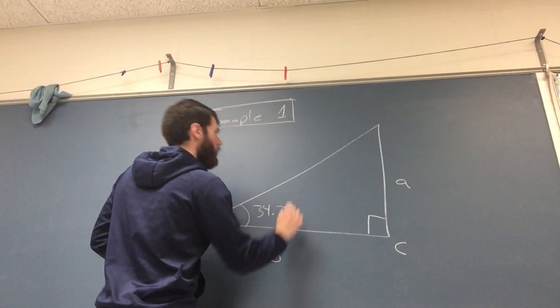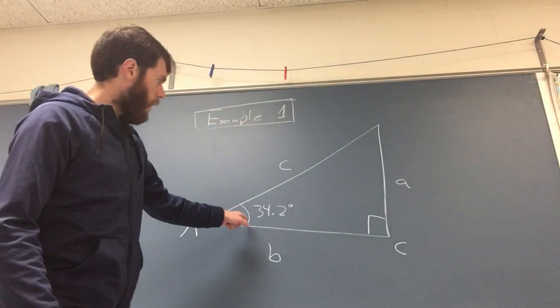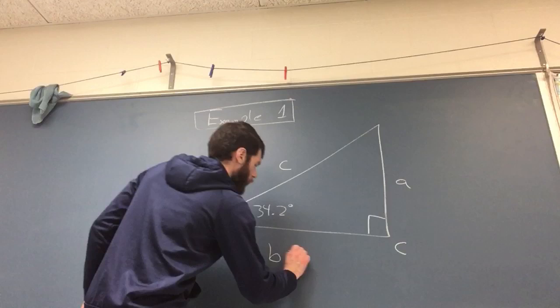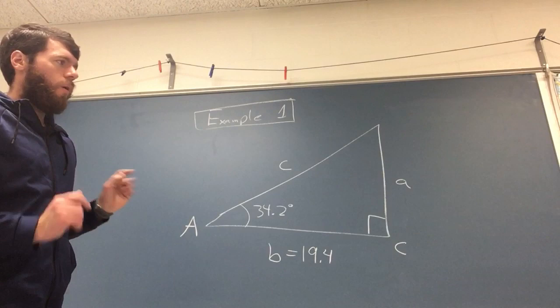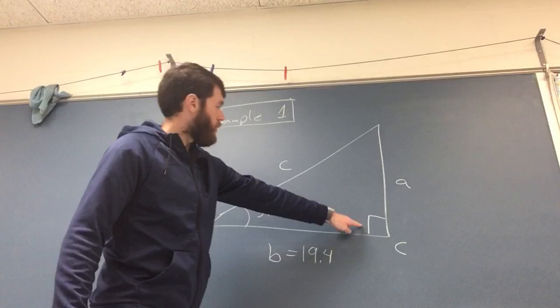There we go. All right, that's all we have: an angle. And oh, we were given a side. We were told that B is 19.4. So we have an angle, we have this side, and we know it's a right triangle. How can we find all the other angles and all the other sides? Very easily to start with.